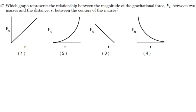Which graph represents a relationship between the magnitude of the gravitational force, Fg, between two masses and the distance, R, between the centers of their masses?